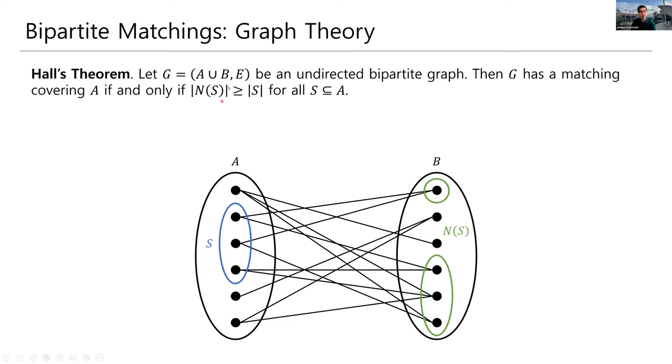So here it's saying if there are at least as many neighbors as there are nodes in the set S, and that is true for every single S we could have chosen, then there must be a matching covering A and vice versa. If there's a matching covering A, then this condition must be true.